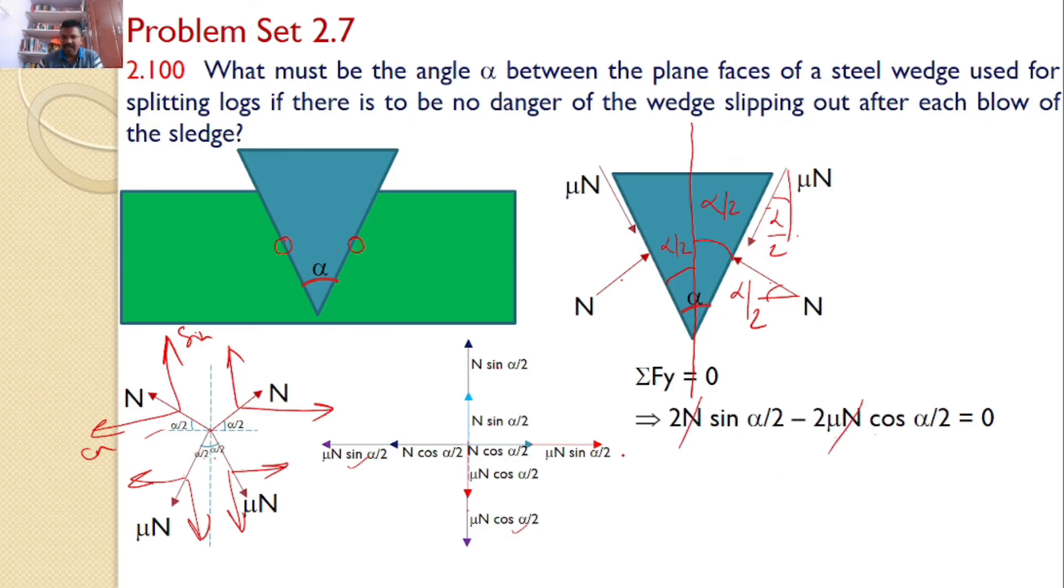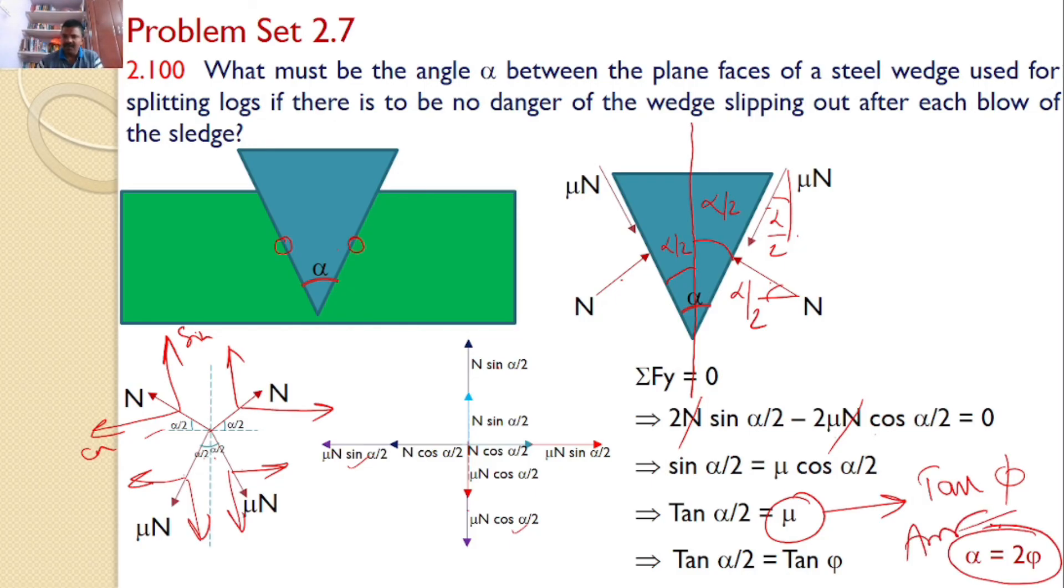So N gets cancelled and you can further simplify: sin alpha by 2 equals mu cos alpha by 2. And further if you simplify you will get tan alpha by 2 equals mu. But mu is the coefficient of friction, that coefficient of friction you can consider as mu equals tan phi, where phi is the friction angle, and tan alpha by 2 equals tan phi. So further you can simplify and you will get alpha by 2 equals phi, or alpha equals 2 phi is the answer for the given problem.